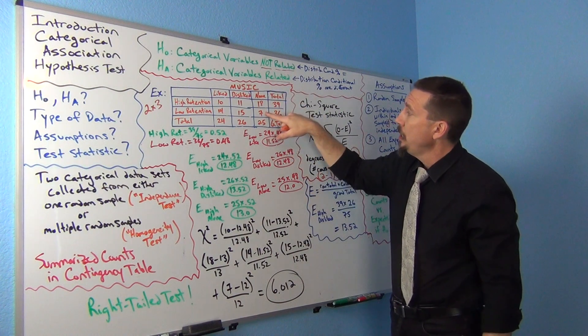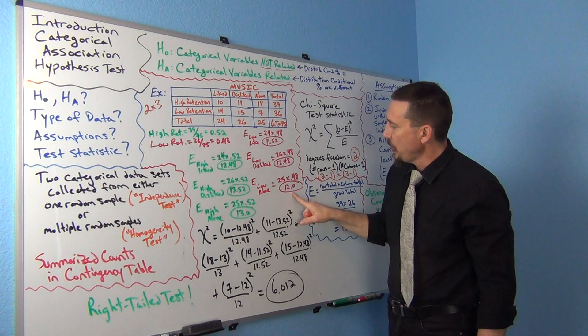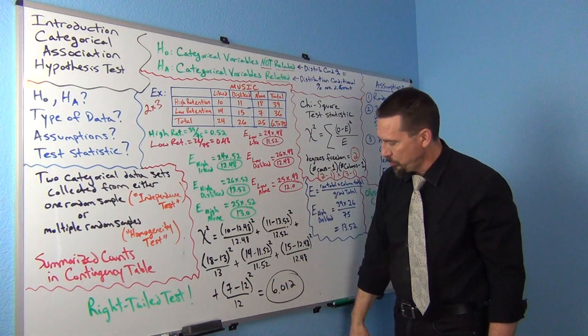Now for the no music group, we had 7 as our observed count, so 7 minus the expected count of 12, so 7 minus 12 squared divided by 12.